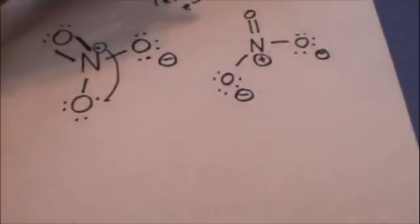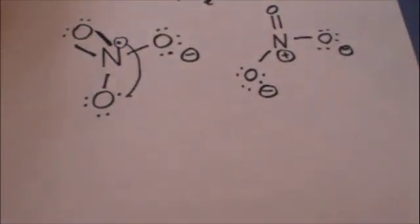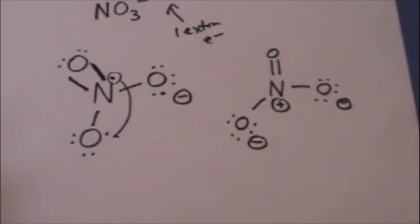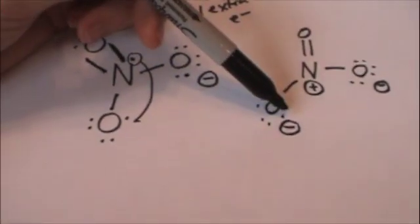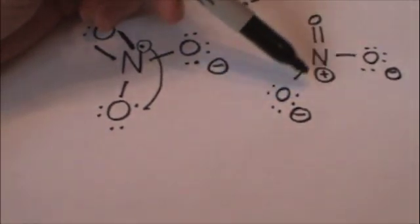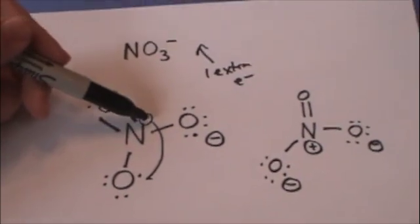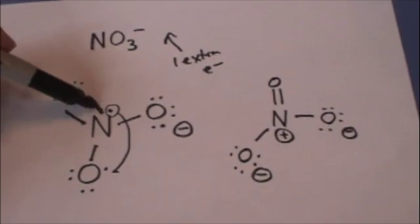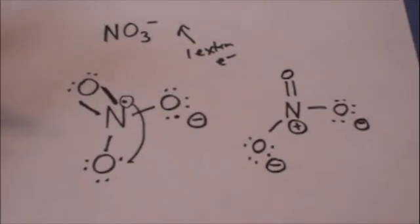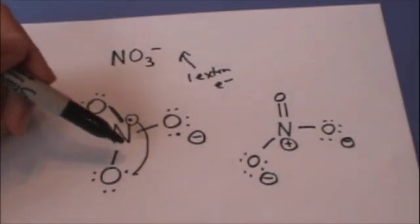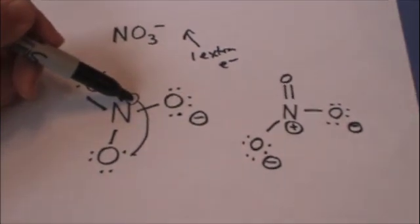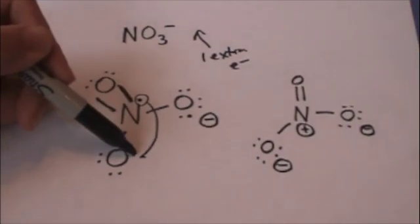So this would be a valid Lewis structure for the nitrate atom. You might be tempted to say, well, wait, why don't these electrons down here just share? You know, you're right here. Well, we knew that they couldn't share because it would have given nitrogen 2, 4, 6, 8, 10 electrons. So since nitrogen can't share, it would have liked to have shared, right? It would have wanted to form a covalent bond with this electron, with this electron.